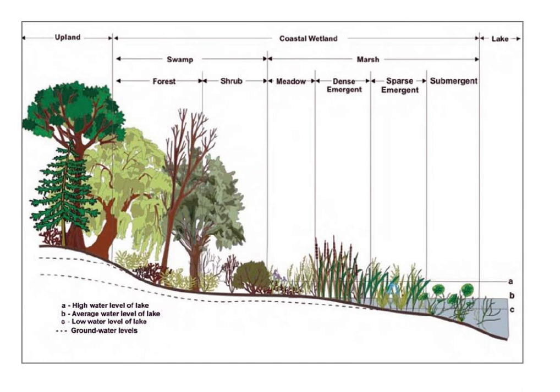Marshes provide habitats for many kinds of invertebrates, fish, amphibians, waterfowl and aquatic mammals. Marshes have extremely high levels of biological production, some of the highest in the world, and therefore are important in supporting fisheries. Marshes also improve water quality by acting as a sink to filter pollutants and sediment from the water that flows through them.